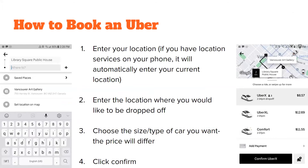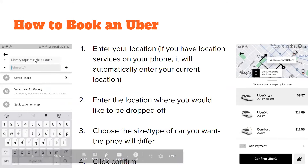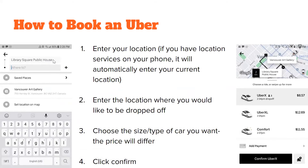To book an Uber, when you open the app a screen pops up. The first line shows where you're located and where you'd like to be picked up. At the bottom where it says 'Where to,' that's the location you'd like to be dropped off.